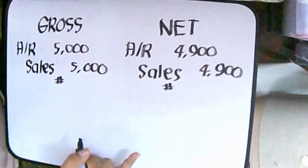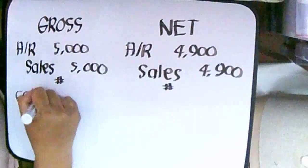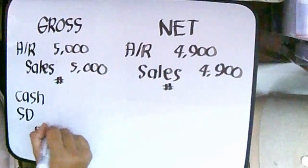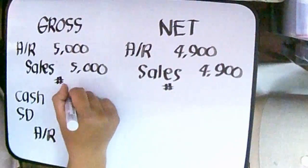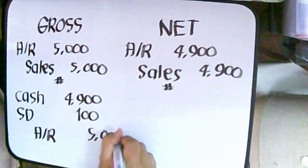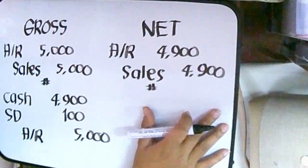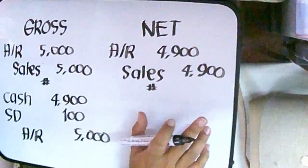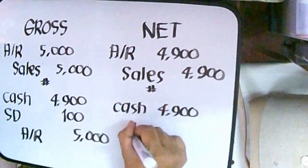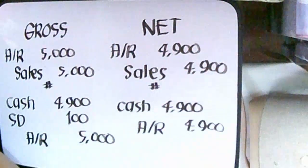What if nakapagbayad within the discount period? So na-avail yung discount. Under the gross method, the entry would be: debit cash, another debit for sales discount, and credit accounts receivable. So cash is 4,900, yung discount natin is 100 pesos, and credit accounts receivable is 5,000 pesos. Under the net method, since na-avail within the discount period, the cash received is 4,900 and we credit accounts receivable of 4,900.